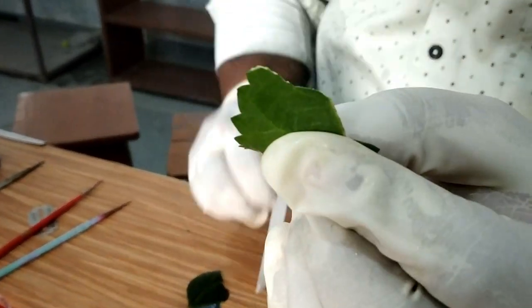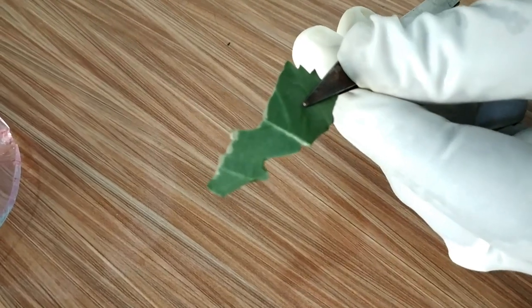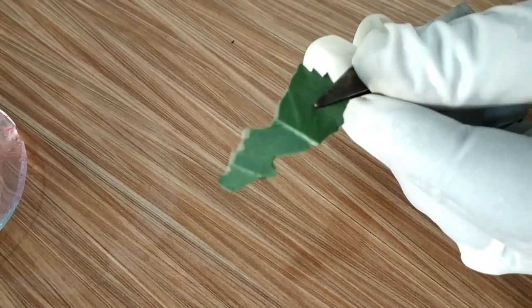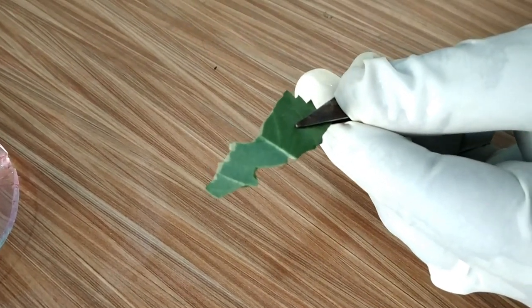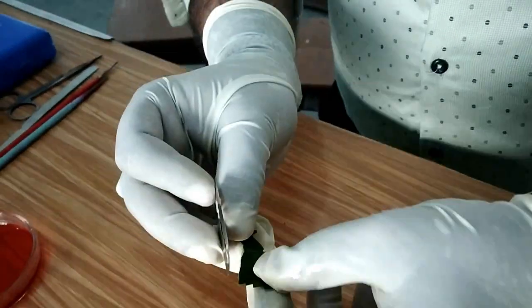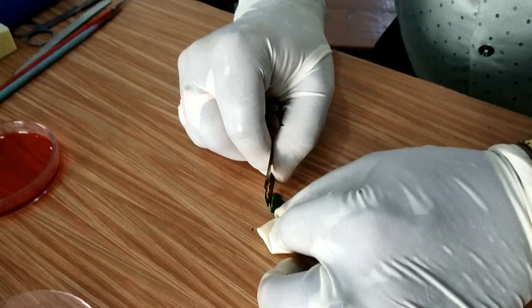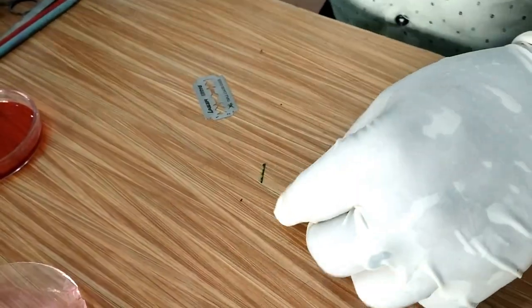Here you can see I have got a transparent peel, and then I will be taking this peel on the slide. After cutting it with the help of a blade, we need to cut that epidermal peel with the help of a blade.